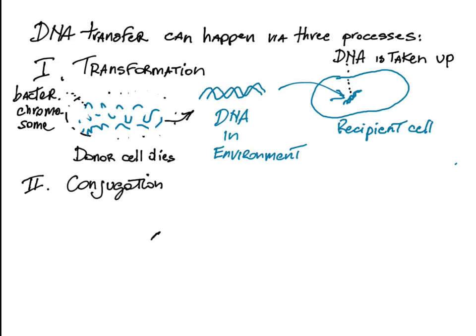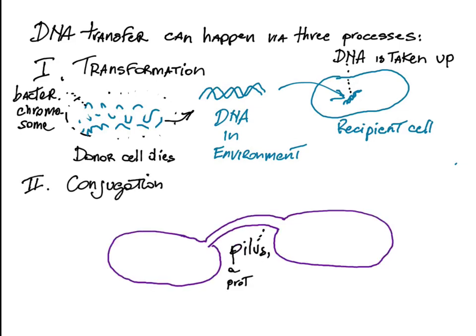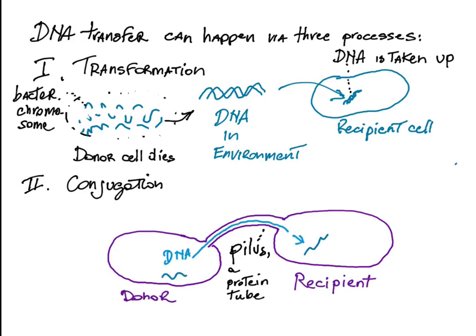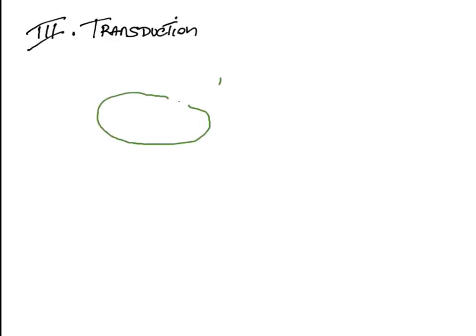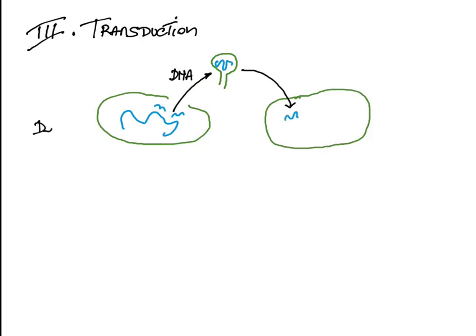Conjugation: DNA travels through a protein tube bridging the two cells, from donor to recipient. Transduction: DNA travels inside a bacteriophage particle released from a donor and enters the recipient as an infecting particle.